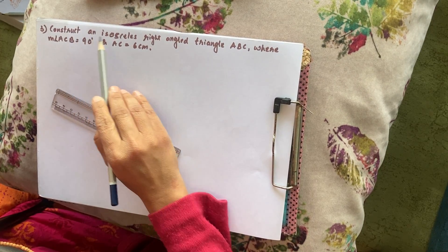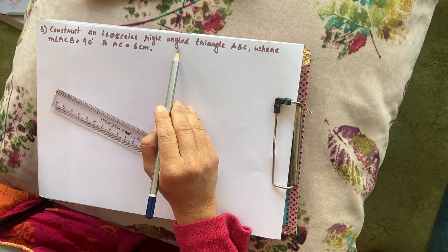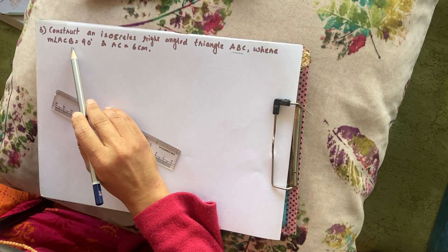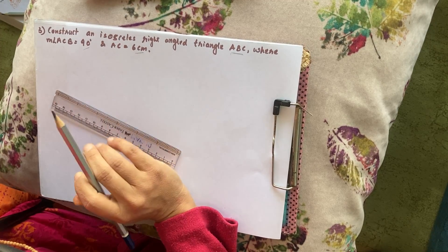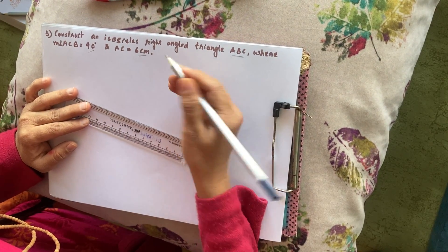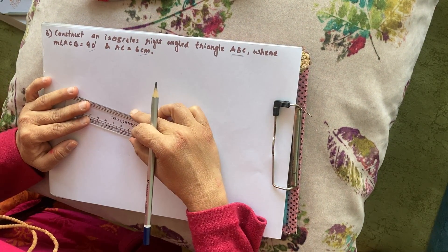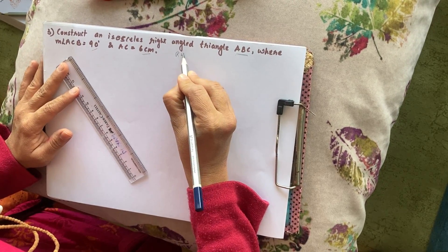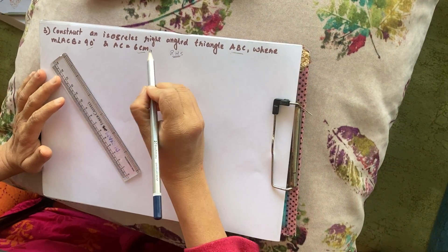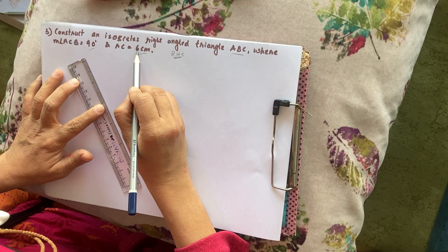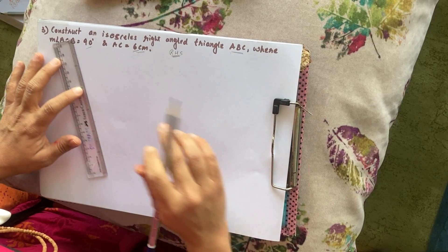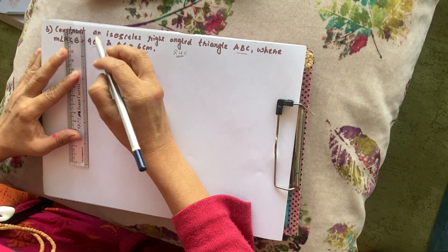Question number three: construct an isosceles right-angle triangle ABC where angle ACB is 90 degrees and AC is 6 centimeters. Now you will think, teacher, no hypotenuse has been given, no mention of any side or any leg. So how can we write it as RHS? Very important point: it is an isosceles right-angle triangle, so both legs are of equal length, whether AC or BC.